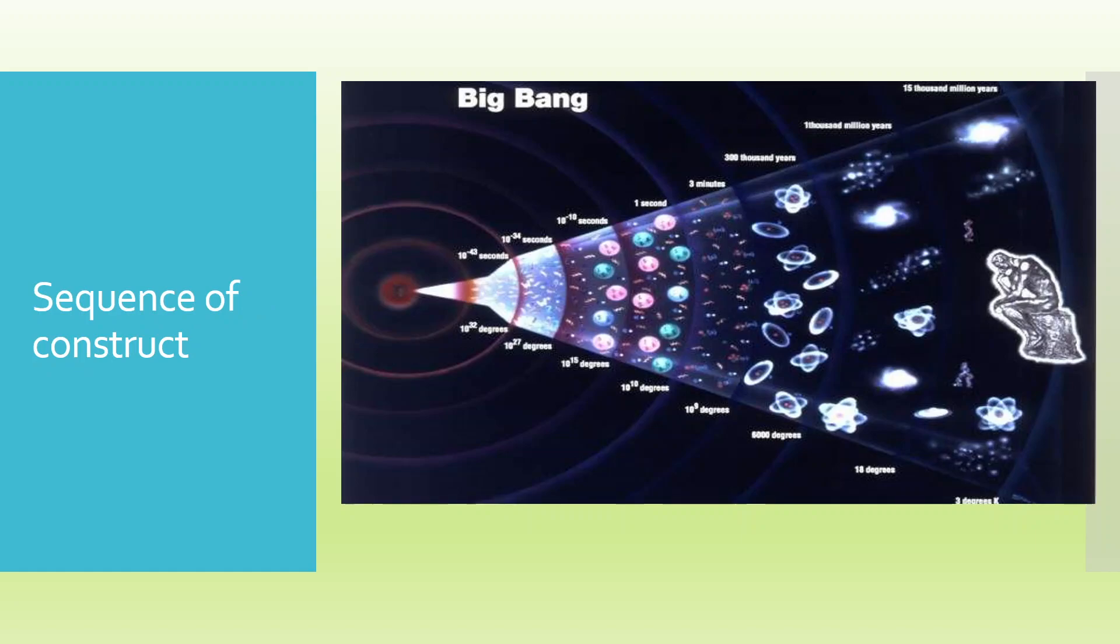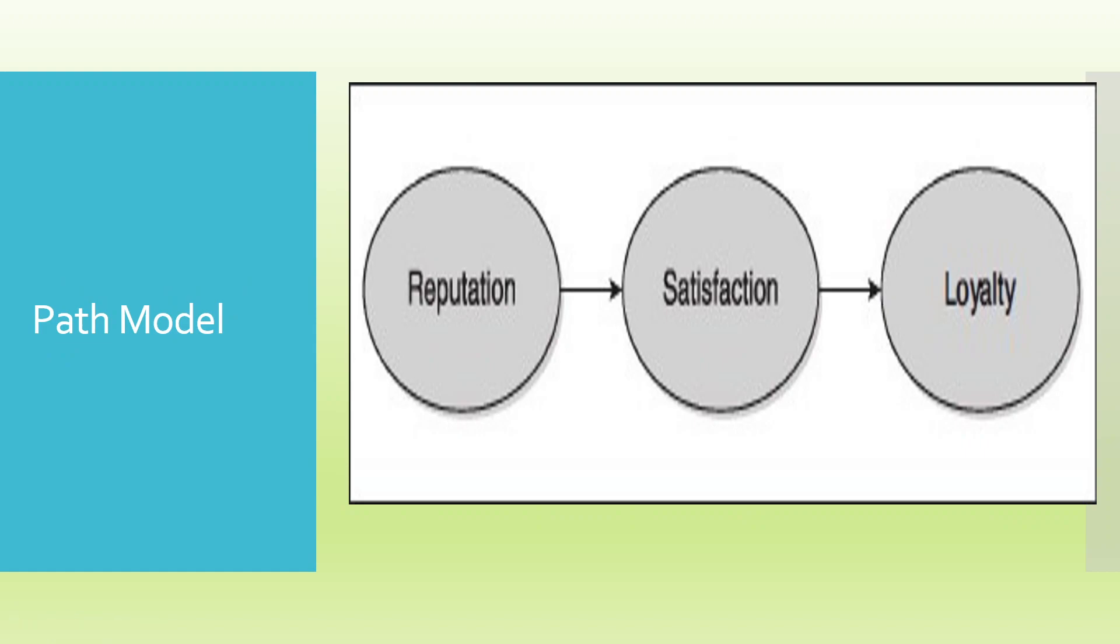Now, there is a sequence of construct which you will always have to follow while drawing a diagram in Smart PLS. It's just like the Big Bang Theory, a series of events which are followed. After this, this event happened; after this, this event happened. Say for example, if I talk about reputation affecting satisfaction, satisfaction affecting loyalty. Now, let me introduce a concept here of endogenous and exogenous variables. Exogenous variable is more like an independent variable and endogenous variable is more like a dependent variable. Here, exogenous is—reputation is an exogenous variable and loyalty is an endogenous variable. Satisfaction, at the same moment of time, is both endogenous and exogenous variable. Let us see the series of events. Reputation is affecting satisfaction. Satisfaction is affecting loyalty.